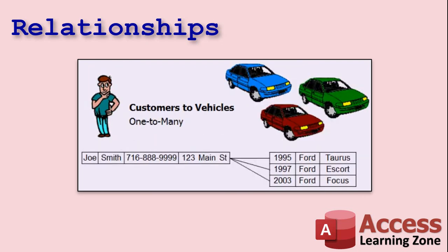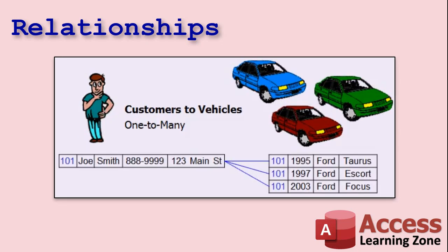The better way to store this information is to use two tables in what's called a one-to-many relationship. Here we have one customer to many vehicles. Joe Smith's information shows up just once, and the vehicles are each in their own table. We use a customer ID — the primary key for the customer table — to track who owns each vehicle. Joe Smith's customer ID is 101, and that 101 appears in the vehicle table.